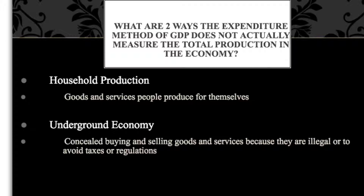In general, household production and the underground economy are the two examples of productive activity happening — something that does have value — but it's not being valued, captured, and included in GDP. Those are the two ways that GDP might have a shortcoming as far as measuring production. Now I want to turn to four ways it might have shortcomings as far as being a measure of well-being.